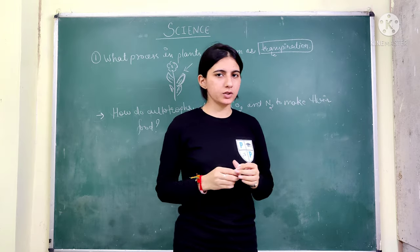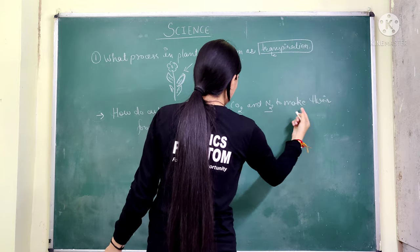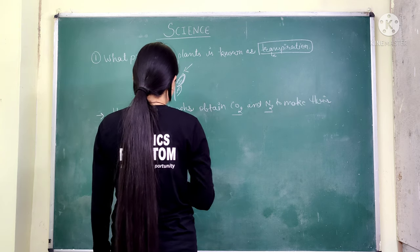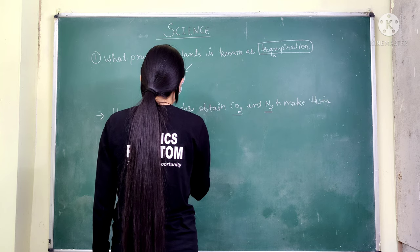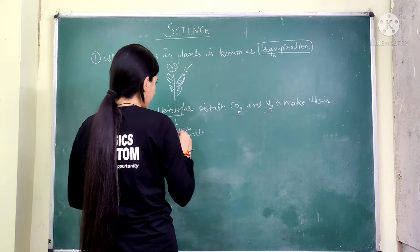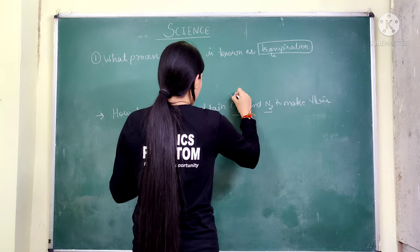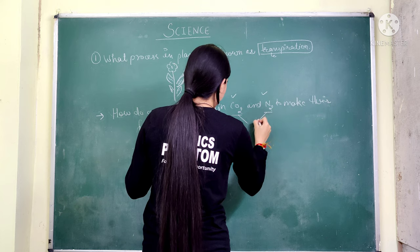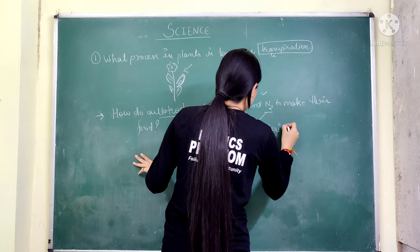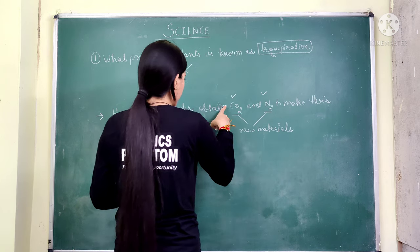Second question is: how do autotrophs obtain CO2 and N2 to make their food? First, what are autotrophs? — organisms which make their own food. There are two types: green plants and blue-green algae. The question is how autotrophs obtain CO2 and N2, which are raw materials. Green plants use these through the process we call photosynthesis.